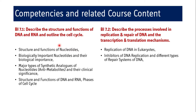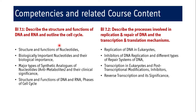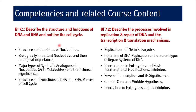Further under BI 7.2: inhibitors of DNA replication and different types of repair systems of DNA, transcription in eukaryotes — not prokaryotes — and post-transcriptional modifications and its inhibitors, reverse transcription and its significance, genetic code and wobble hypothesis in detail, translation in eukaryotes and its inhibitors, and chaperones, protein folding, and post-translational modifications.